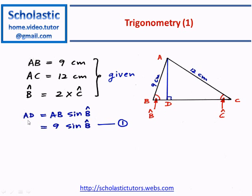We write an expression for AD. AD is equal to AB times sine B. AB equal to 9, and 9 times sine B is the value of AD. Similarly, we can write another expression for AD.